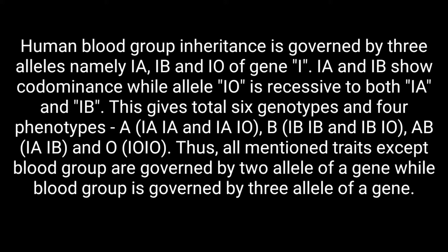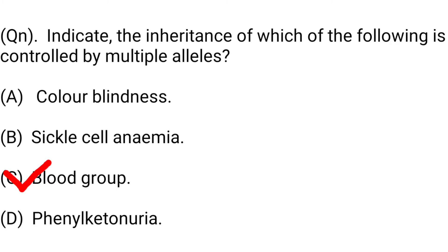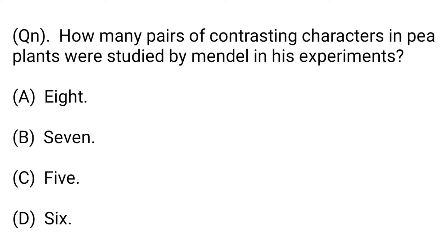The phenotypes are: AB (IAIB) and O (IOIO). All the other mentioned traits — colorblindness, sickle cell anemia, and phenylketonuria — are governed by two alleles of a gene, while blood group is governed by three alleles. Hence, option C, blood group, is the right answer.